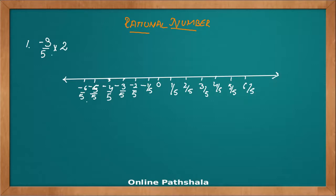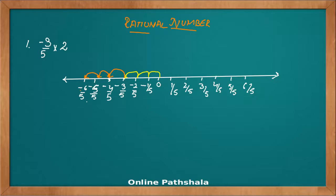What the question asks is I have to jump 2 times minus 3 by 5. So starting from 0, the first jump of minus 3 by 5 counts 1, 2 and 3. One more jump of minus 3 by 5 because I am multiplying by 2 — again 1, 2 and 3. So where I arrive is minus 6 by 5.